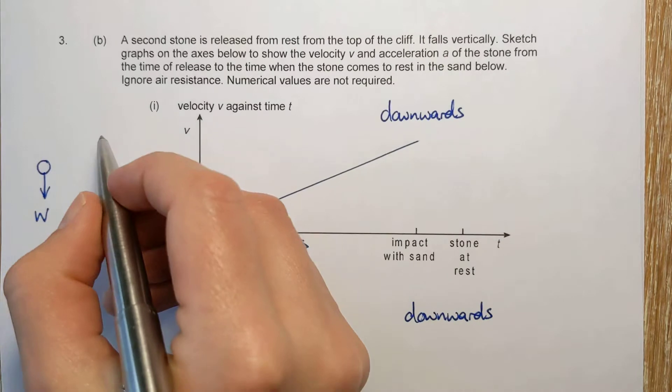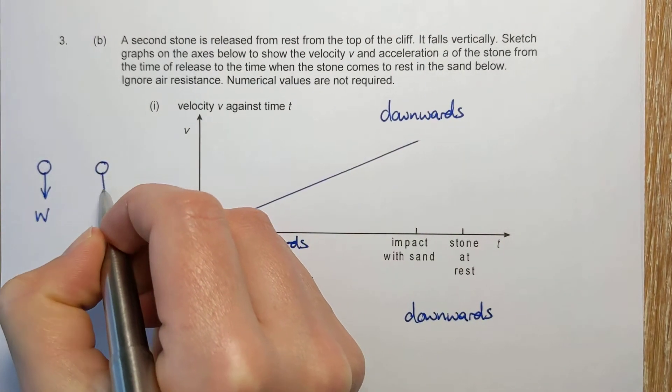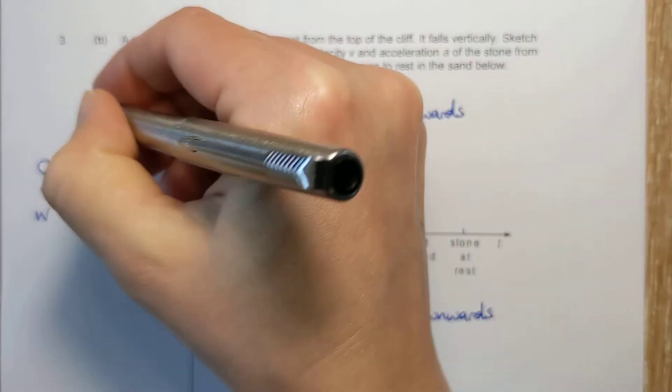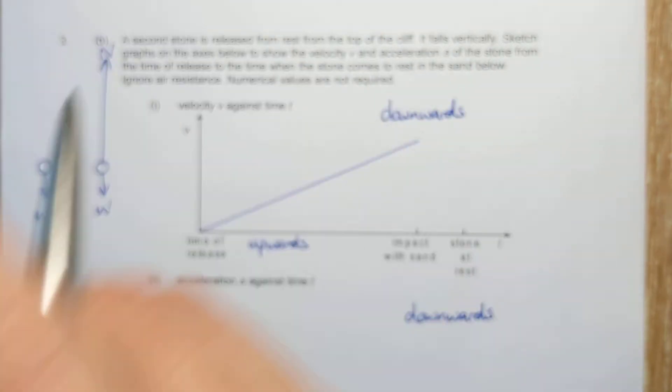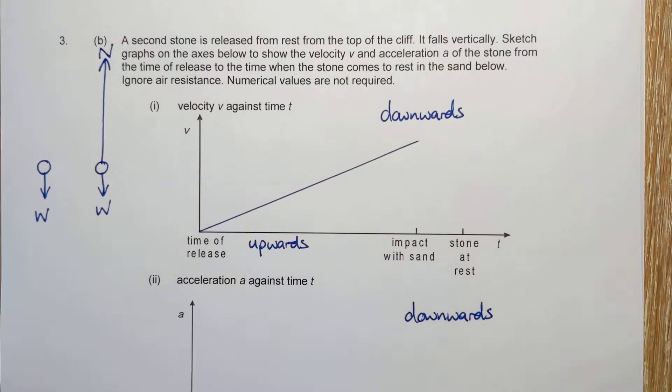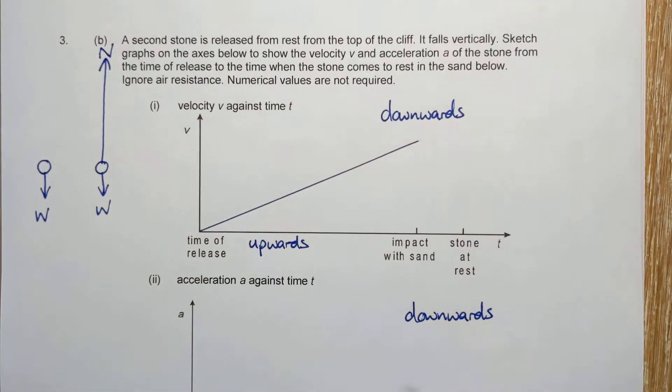When it hits the sand, it obviously still has its weight acting on it, but now it's got a massive upwards normal contact force from the ground. So that's the ground pushing upwards on the stone. That's what's going to slow it down. So the resultant force, upwards, acceleration, upwards.